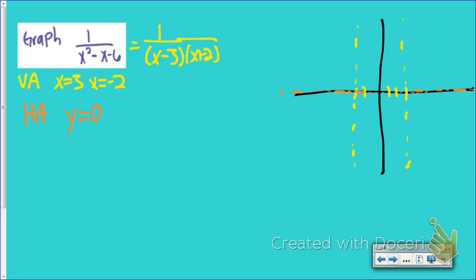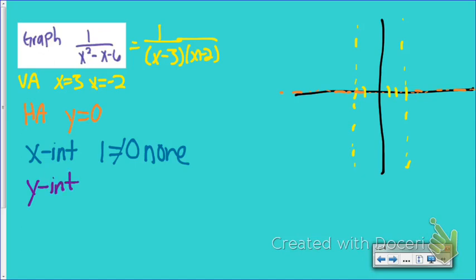Now I have my asymptotes, so I'll find my intercepts. For the x-intercept, the top equals 0 — but the numerator is 1, which can never equal 0, so there are no x-intercepts. We're not going to cross the horizontal asymptote in this case. For the y-intercept, I plug in 0 for x: that gives 1 divided by (0 minus 0 minus 6), so the y-intercept is at negative 1/6.